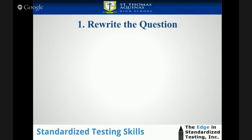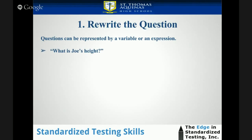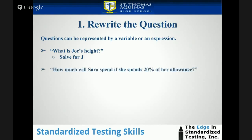Let's focus on Step 1: rewriting the question. Questions can be represented by a variable or an expression. For example, 'What is Joe's height?' — solve for J. 'How much will Sarah spend if she spends 20% of her allowance?' This is a question that can be represented by an expression: 0.2 times S, where S represents Sarah's allowance.